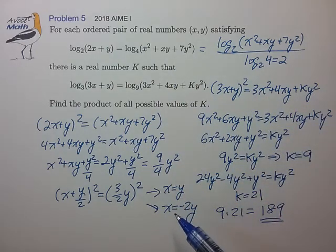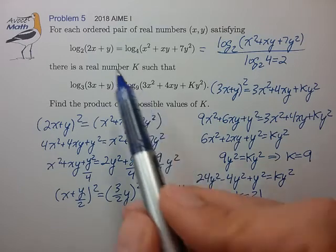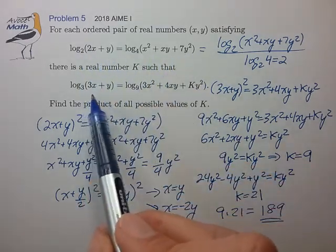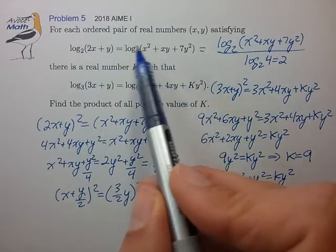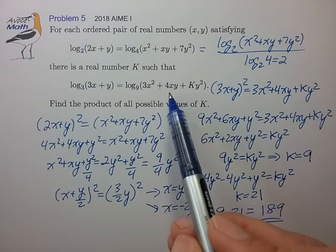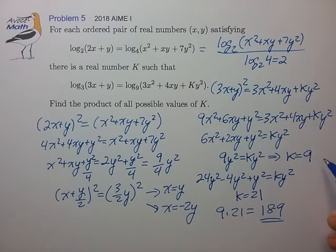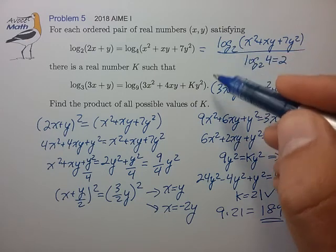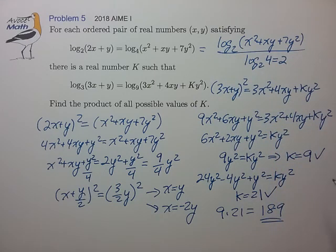So there's nothing that we did in the algebra here that violates the condition that the arguments of the logarithms have to be positive for some solutions in x and y. So that's one last check you need to do to validate that k is equal to 9, k is equal to 21 are both valid solutions for the original problem. And that's true. And so the final answer is 189.